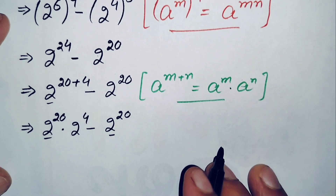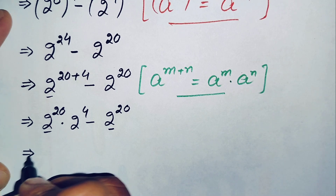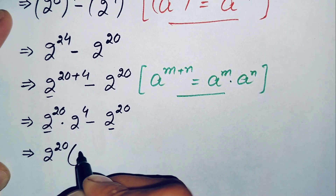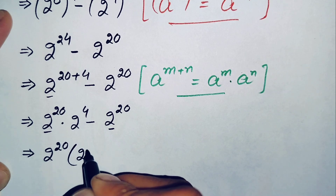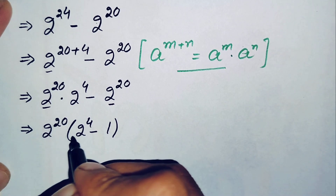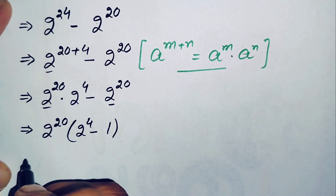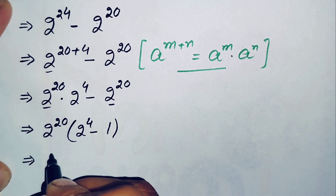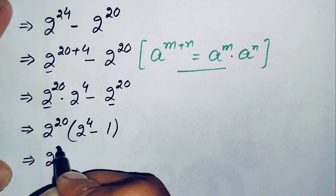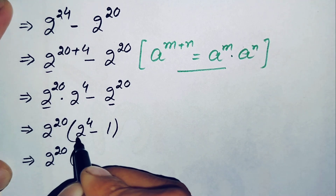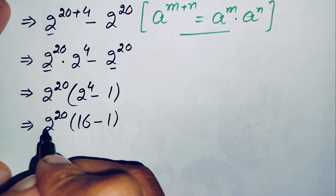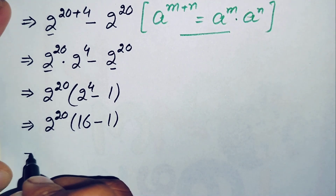Here 2 raised to power 20 is common, so we take it out as a common factor from both terms. This becomes 2 raised to power 20 times the quantity 2 raised to power 4 minus 1. Now the value of 2 raised to power 4 is 16, so this becomes 2 raised to power 20 times 16 minus 1.